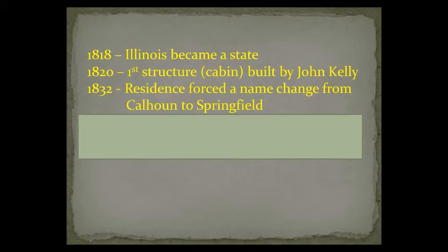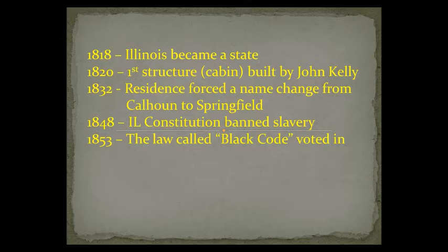So in 1832, when Springfield changed her name away from Senator Calhoun's name because he was associated with slavery and some other Southern ideals, that was just a seed that got planted. Because later on in 1848, the Illinois Constitution actually banned slavery. And then in 1853, a law was passed called the Black Code, and it was voted in. There are books written on this — let's take a look at a short cliff note version of what this is.